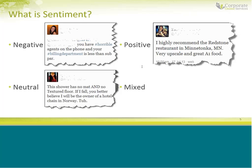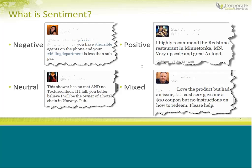The neutral post: 'This shower has no mat and no textured floor. If I fall, you better believe I'll be the owner of a hotel chain in Norway.' You might think this is negative, but does it actually express a sentiment? Not really. This could just be an observation. The person didn't fall or have a bad experience — there's nothing to indicate that. So this is a neutral post. The mixed post: 'Love the product, but had an issue. Customer service gave me a $10 coupon, but no instructions on how to redeem. Please help.' This is a mixture of both positive and negative sentiment.